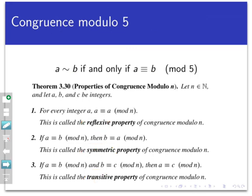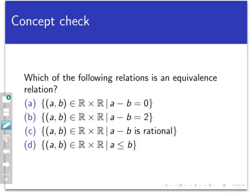Let's end with a concept check. Which of the following relations on the real numbers is an equivalence relation? For each one, I've listed the set of points being related and the relation itself — select all that apply. The answer is just A and C. Those are the only two equivalence relations. All four are legitimate relations, but only the first and third are equivalence relations.